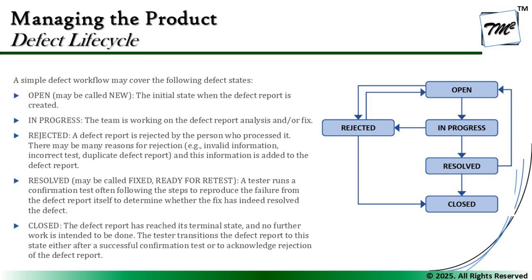Duplicate means the defect exists but is a copy of another defect already reported, so working on the original will fix both. The parent category 'Rejected' means the defect is returned back to the testing team. If the defect is 'Resolved', that status is used — alternatively we can use 'Fixed' or 'Ready for Retest'. This status means the developer has performed the required actions to resolve the issue and handed it back to the tester to conduct confirmation testing. The terminal state — where no further action is required — is called Closed.